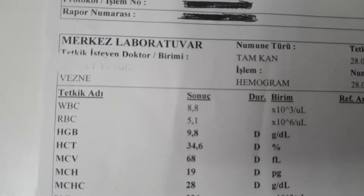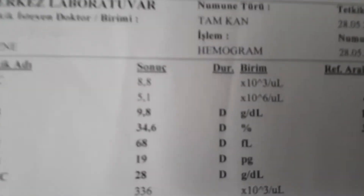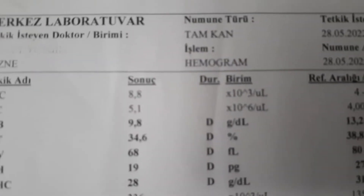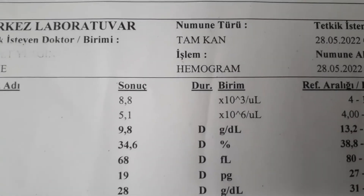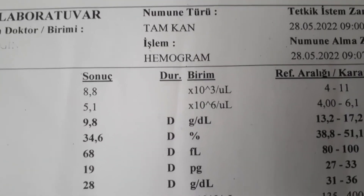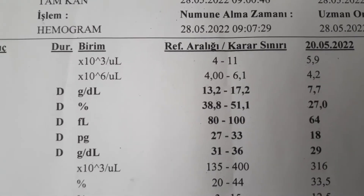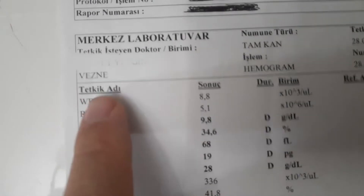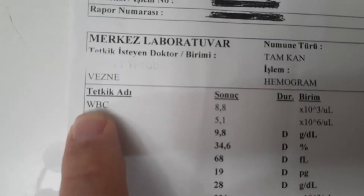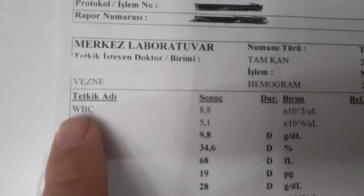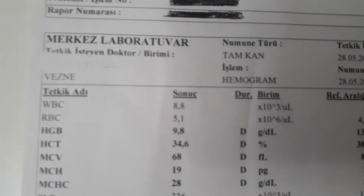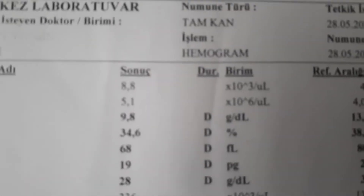A rise in WBC is usually a sign of infection — it may indicate bacterial or viral infection. Apart from that, it increases in many cases such as allergies, autoimmune diseases, pregnancy, fever, burns, and stress. Low WBC is not seen very often, but it may decrease in bone marrow diseases, with some drugs, in HIV infection, autoimmune diseases, and liver and spleen diseases.